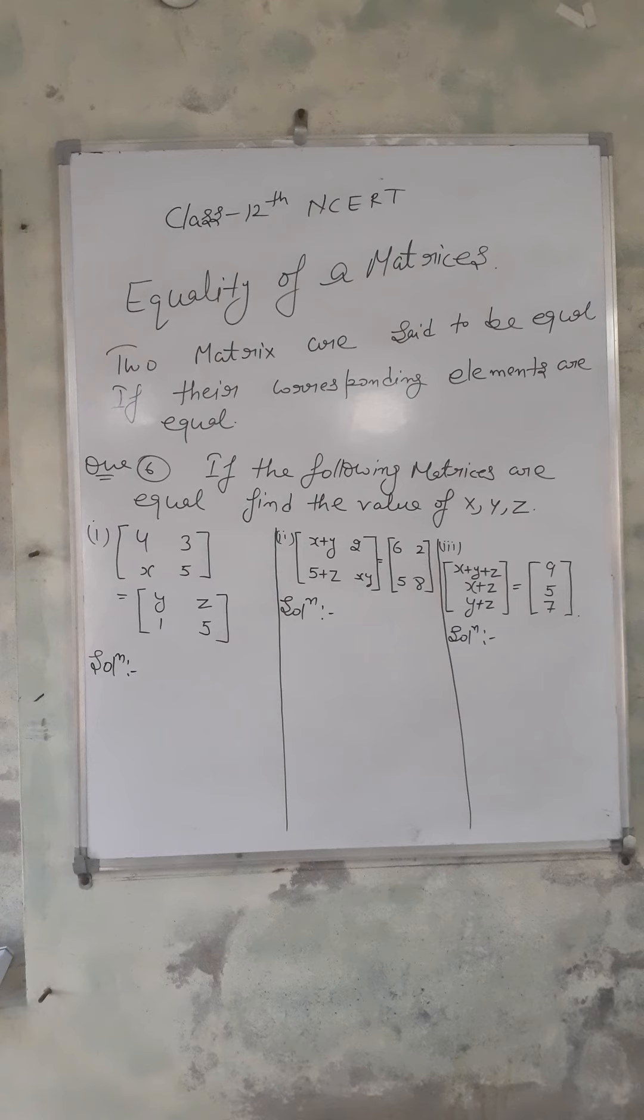That means the first element must equal the first, second to second, third to third, and fourth to fourth. All elements in one matrix must match the corresponding elements in the other matrix - like a mirrored image. Two matrices are set to be equal. So see here, Question 6.